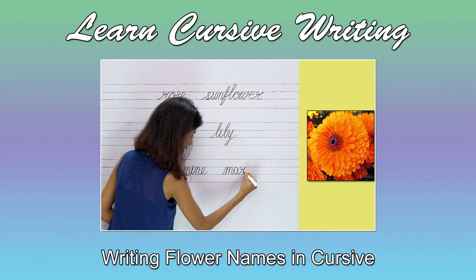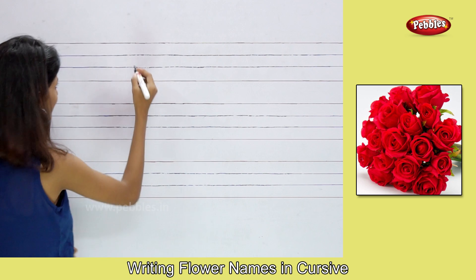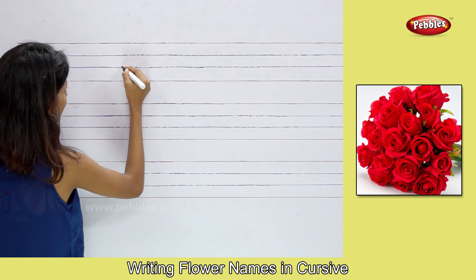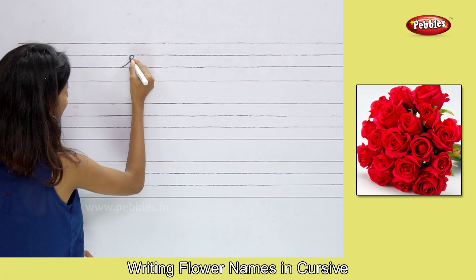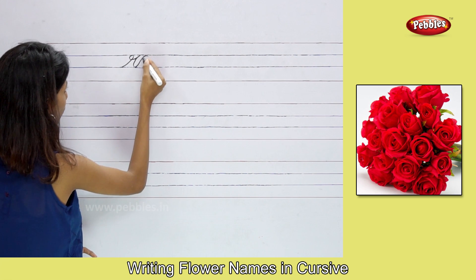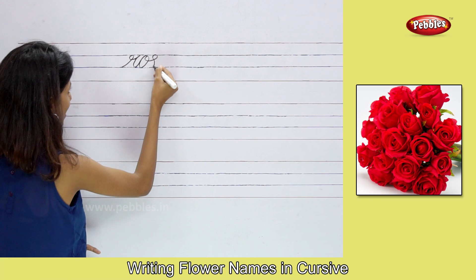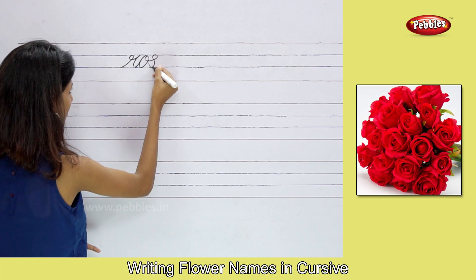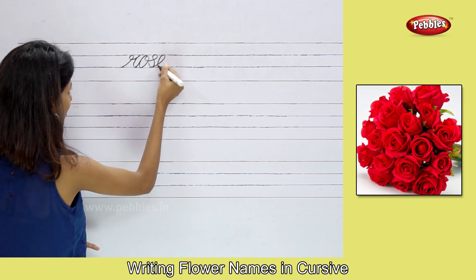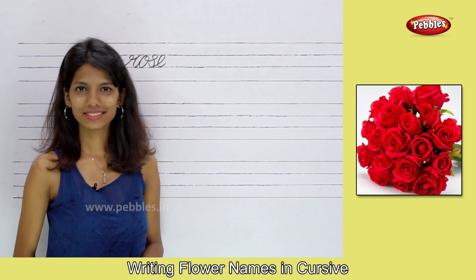Writing flower names. Rose. R, O, S, E. Rose.